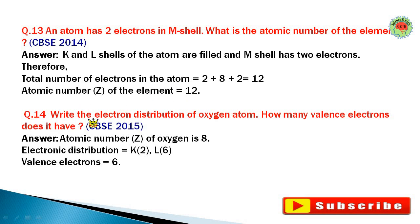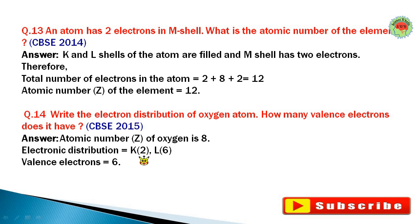Question number fourteen: Write the electron distribution of the oxygen atom. How many valence electrons does it have? Atomic number of oxygen is 8. Electronic distribution: first shell 2, second shell 6 — that is 2, 6. The outermost shell has 6 electrons, so oxygen has 6 valence electrons.